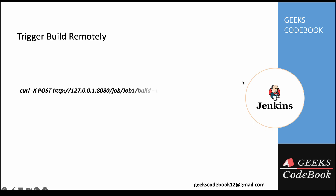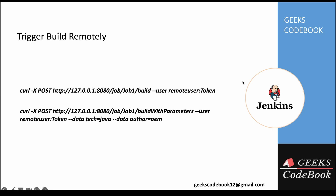Using this approach you can trigger both kinds of jobs — jobs without parameters and jobs with parameters. For a simple curl command, you make a POST call to your Jenkins URL, then the job path and job name, followed by 'build'. You use '--user' (or '-u') and pass the remote username and token.